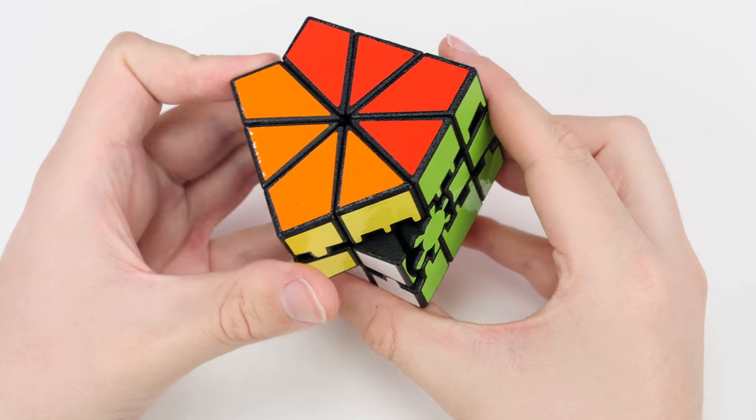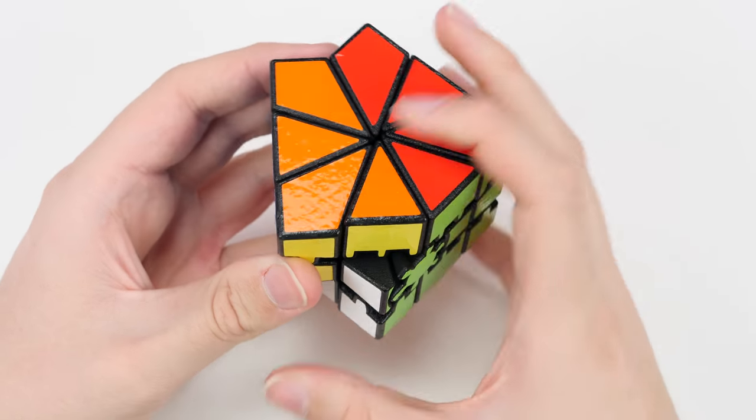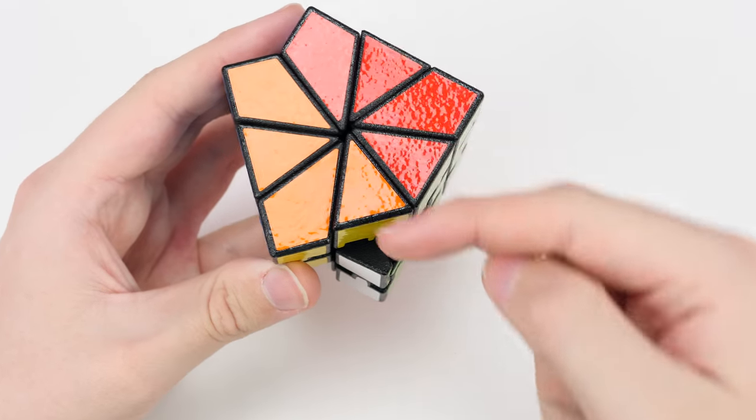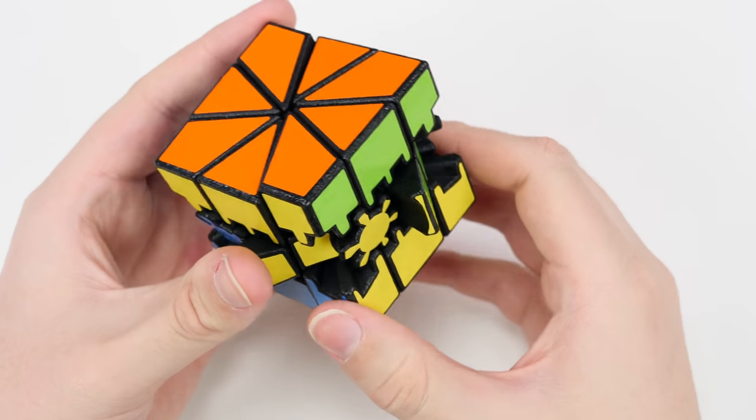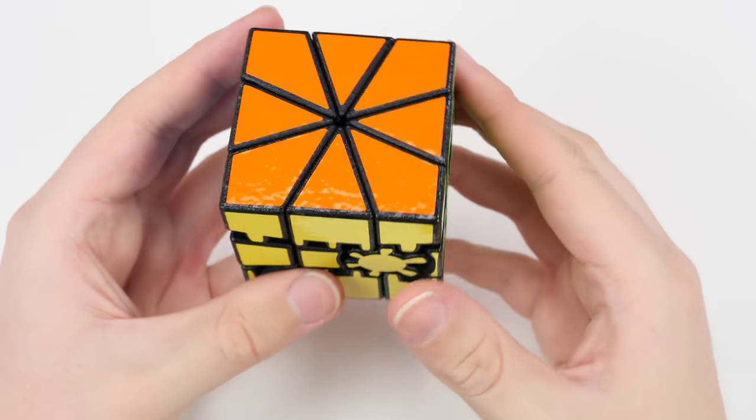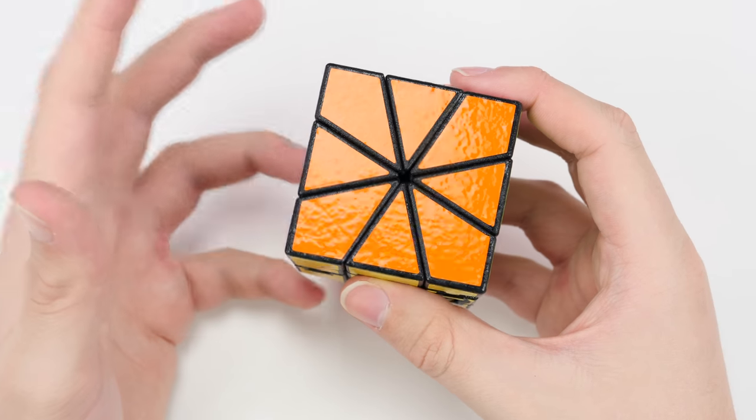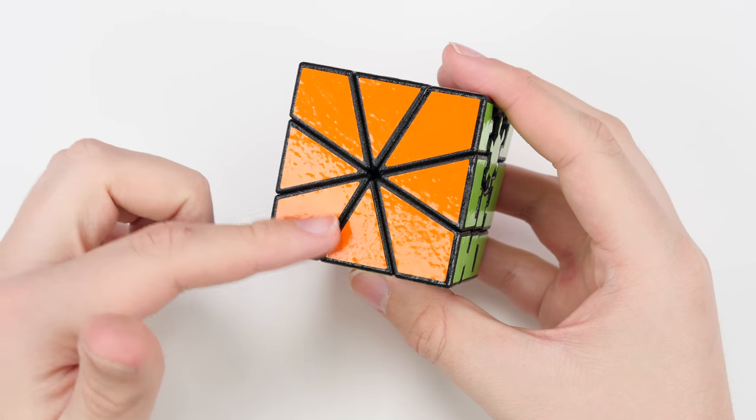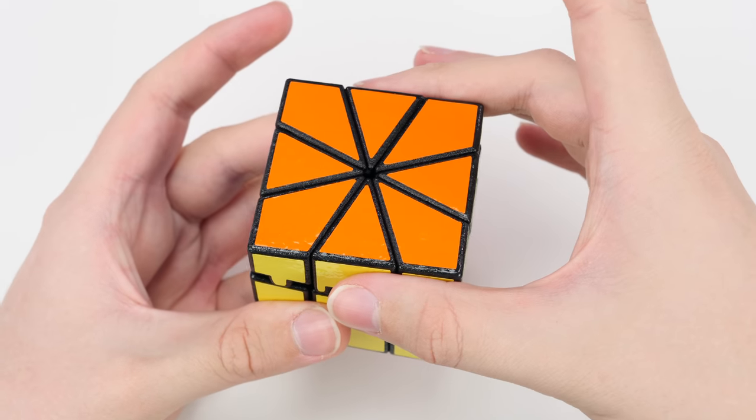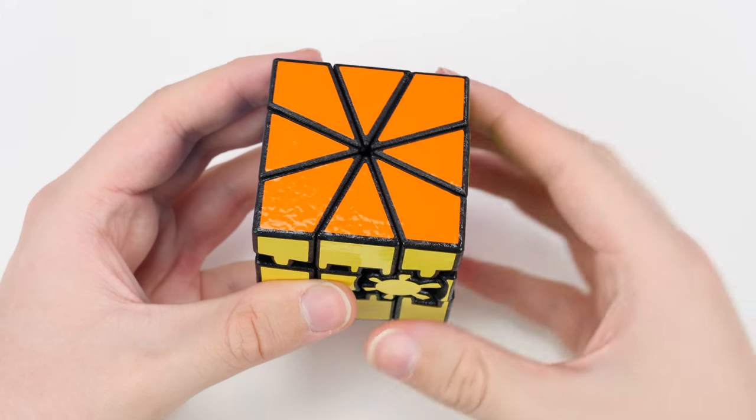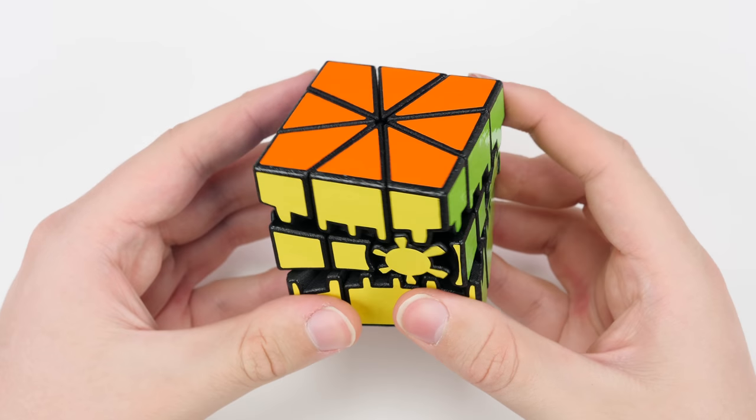From there you can kind of move it back like that and then still do another turn like that whereas on a normal cube that wouldn't really work. So it basically just allows for more turns to be possible and it's an interesting idea. I think it would be interesting to see a normal square one like this where you could turn it from every single side so if you just turn the top by a little bit you could still do all kinds of turns so there was no bandaging basically.